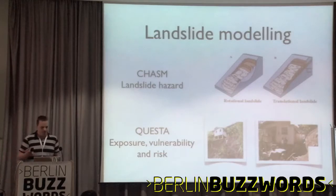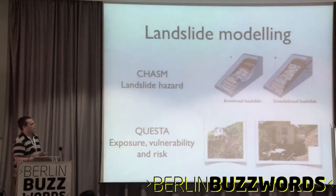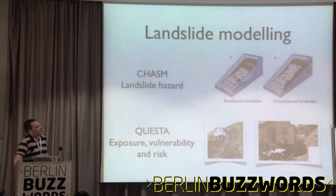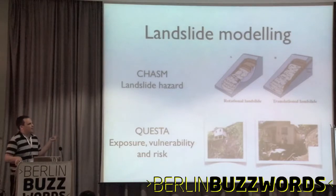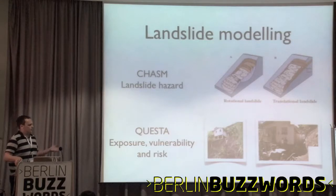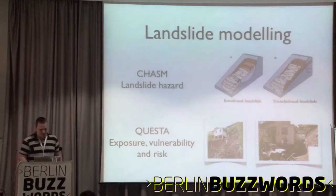The University of Bristol has world-leading landslide modellers — I'm just a software developer. They develop two products used by the World Bank, government, and industry. Chasm is a physically-based model of slope hydrology and stability. Questa is an economic model that can calculate exposure, vulnerability, and overall risk. Chasm feeds into Questa, although you can use Chasm on its own, and people do that quite frequently.